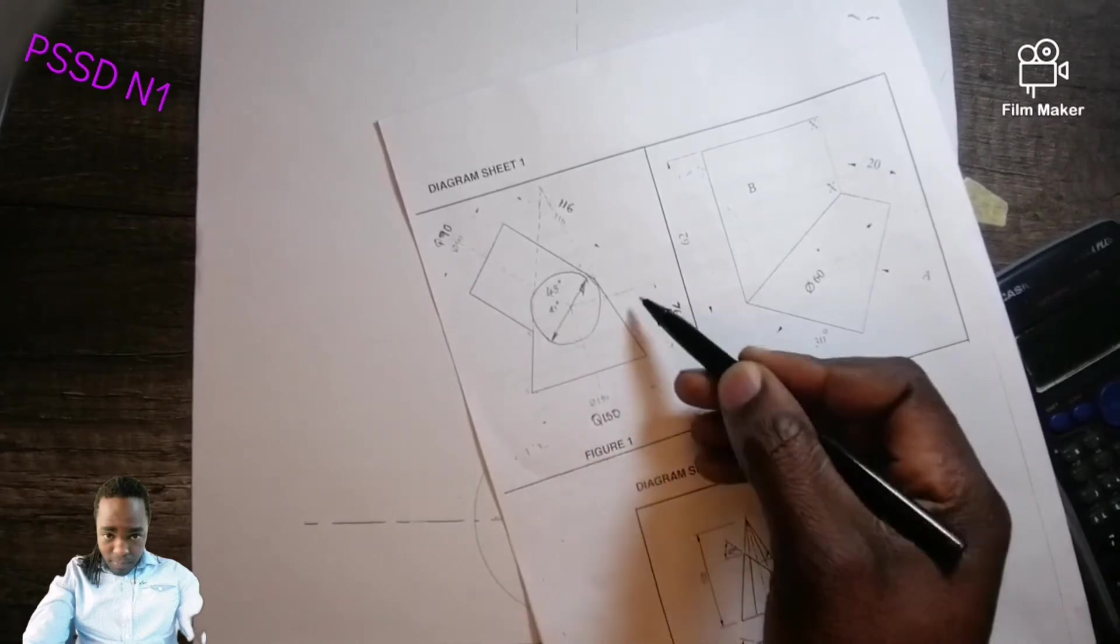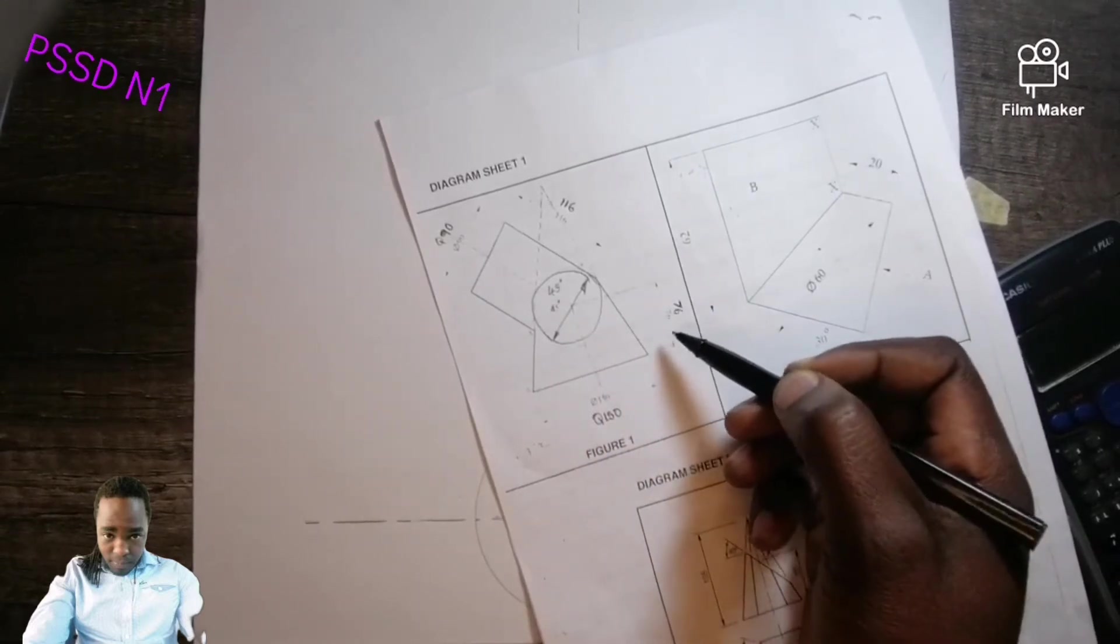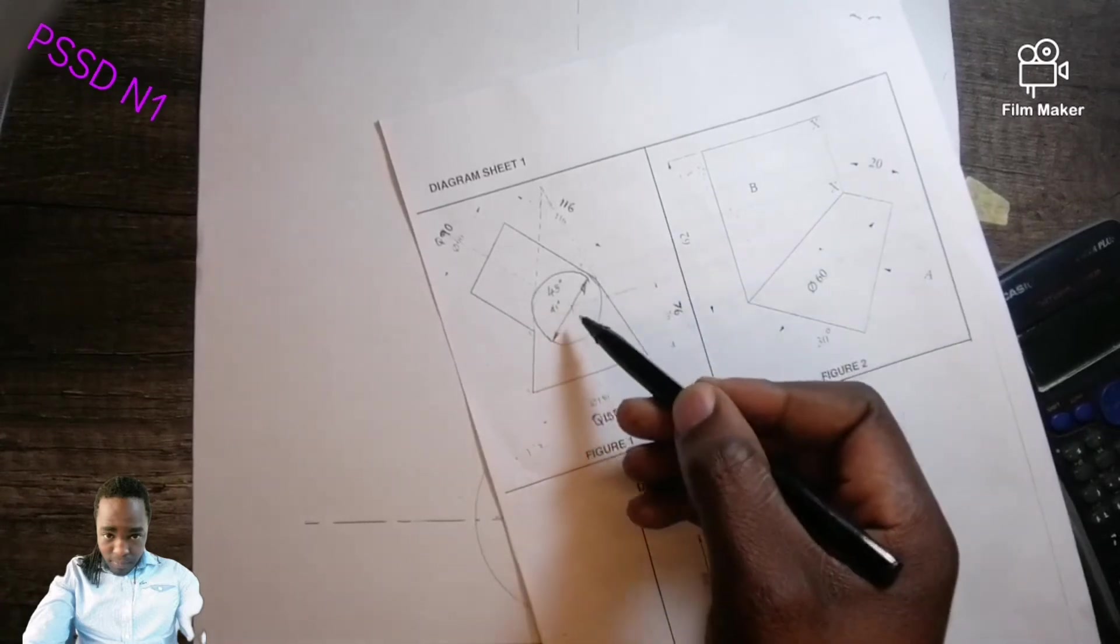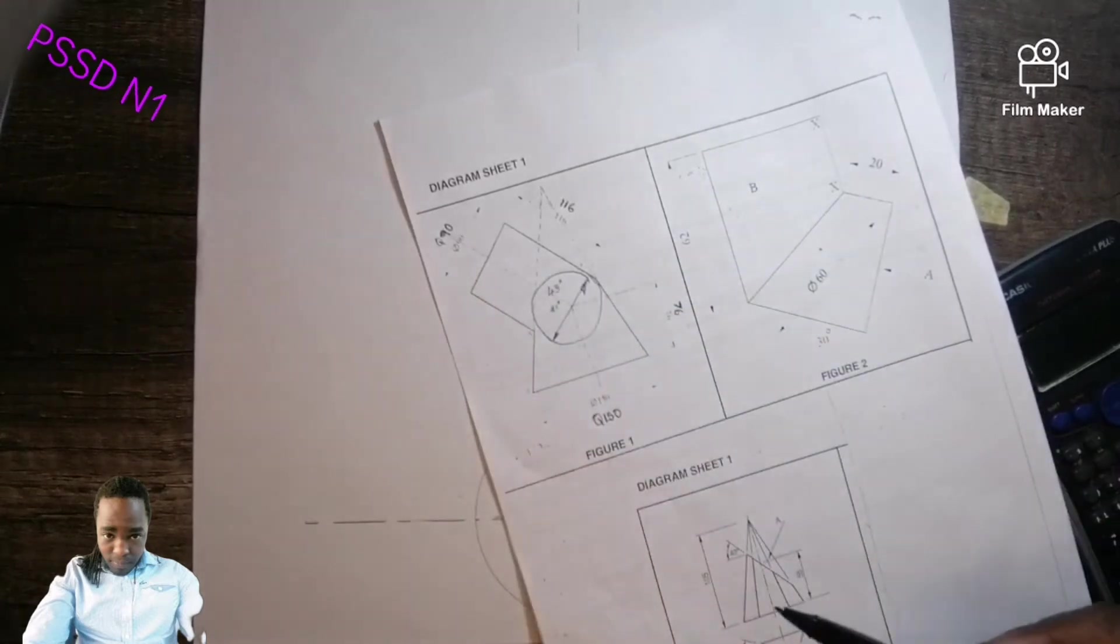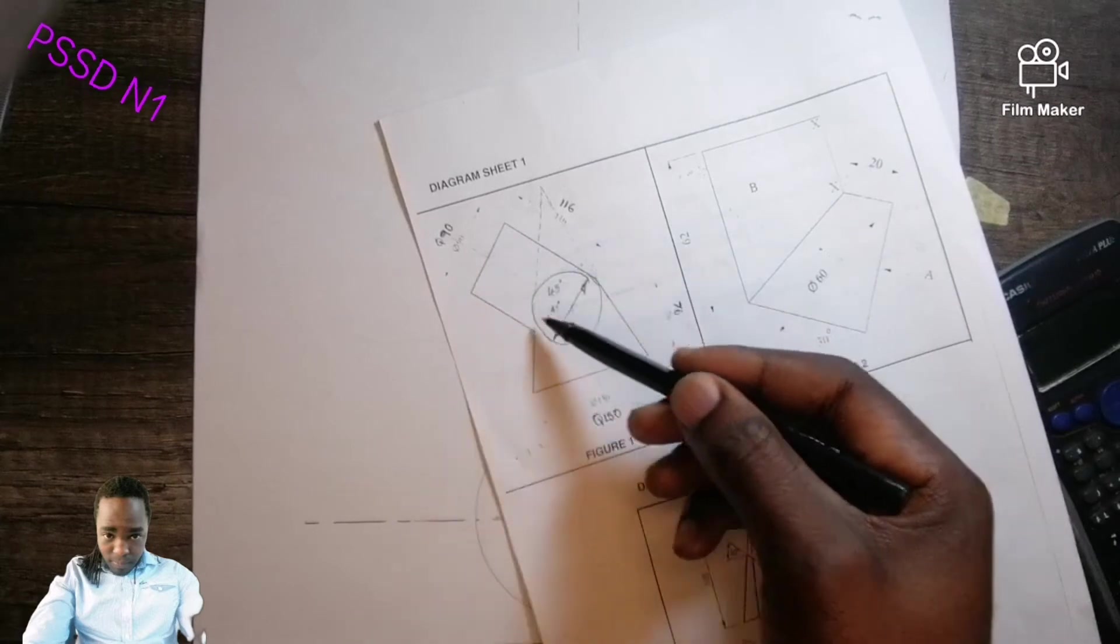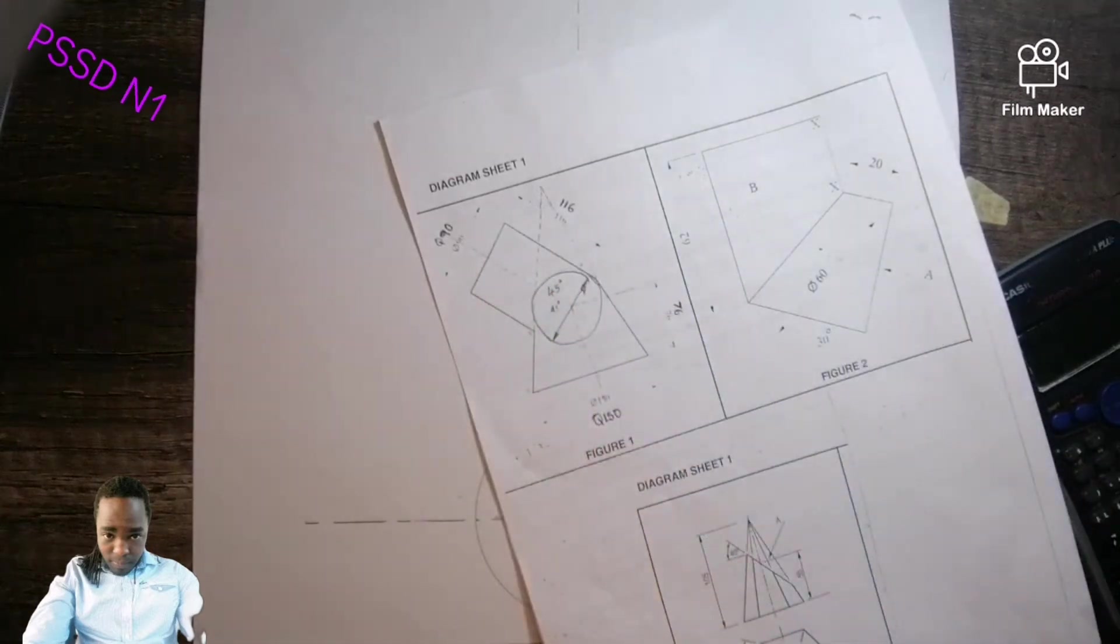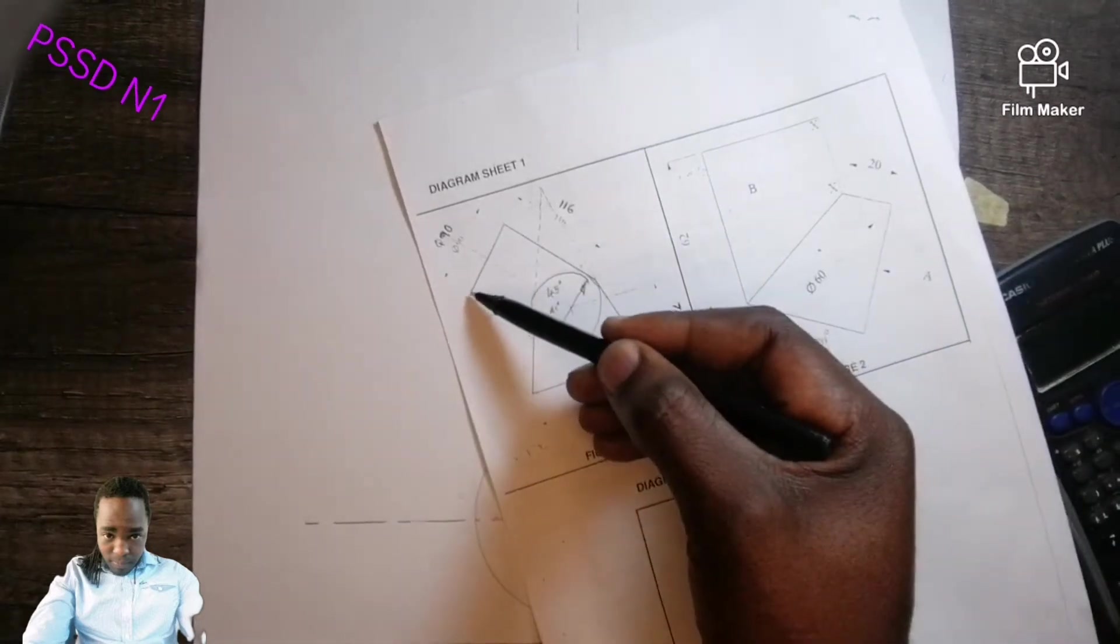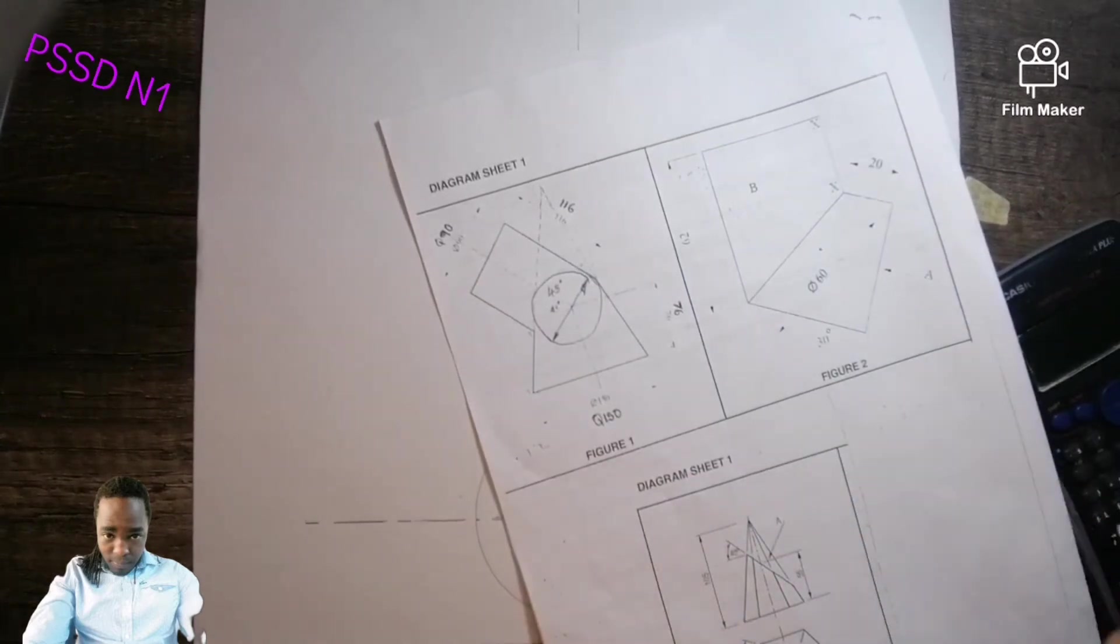From here till there is 70 millimeter. This 45 is the angle of the cylindrical pipe, so this cylindrical pipe is at an angle of 45 degrees. The diameter of the cylindrical pipe is 90.